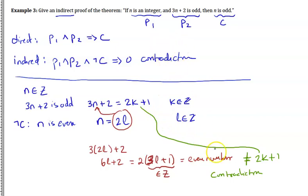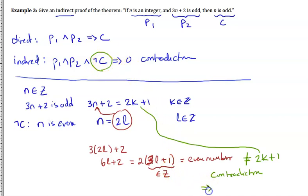The indirect proof says that if you get a contradiction, your assumption — that the conclusion is not true — must be incorrect. So it's incorrect that N is even, meaning N has to be odd. That's the format of an indirect proof.